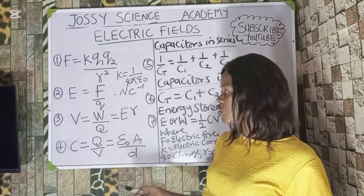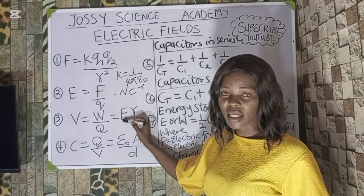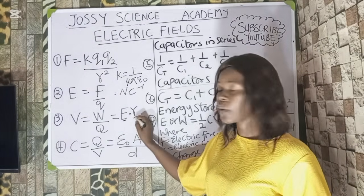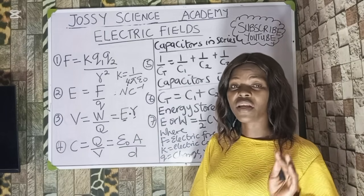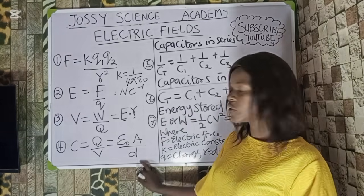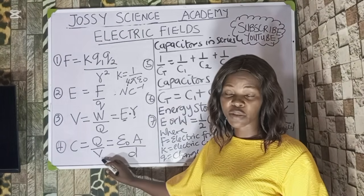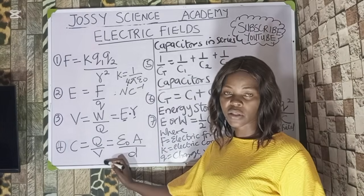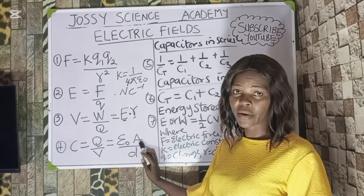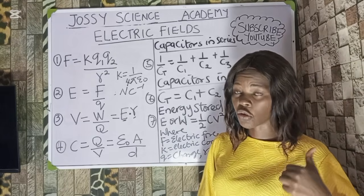There is a relationship connecting electric field intensity and electric potential. Electric potential V equals work done over charge. It can also be expressed as electric field intensity multiplied by distance. Moving to capacitance: the capacitance of a capacitor is the ratio of charge to the potential difference between the two plates, so C equals Q over V. Capacitance can also be expressed as ε₀·A divided by d.